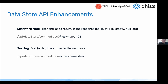We also added filtering. You can filter on any property — for instance, you can filter on the ID, or do a 'like' filter on the name, using the filter parameter in the API. This is very useful for web applications that want to show lists of some kind of entity and then do filtering to find the relevant entities in the data store.